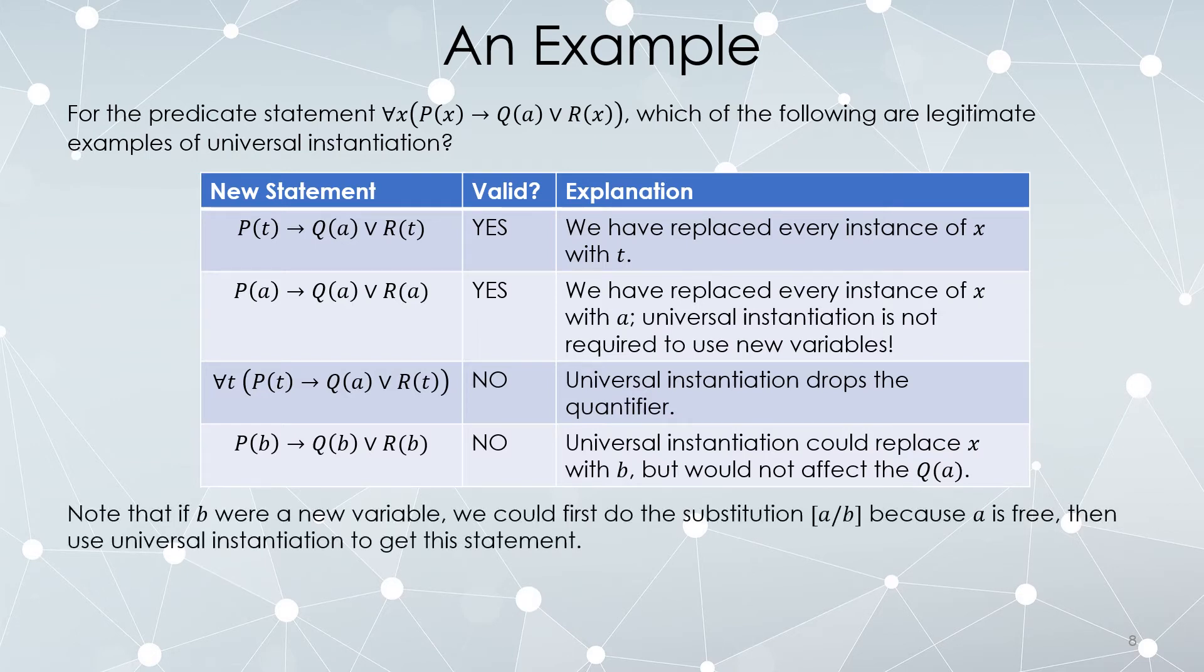I'm not saying you can't get this statement. I'm just saying it's not an example of universal instantiation. If b was a new variable, in other words did not exist anywhere else in whatever proof you were doing, what you could do is you could do a substitution on this, replace a with b, and then you could do this instantiation. But you can't get here just in one step.